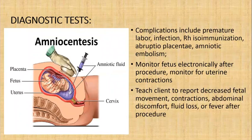Complications of amniocentesis include premature labor, infection, Rhesus isoimmunization, abruption of the placenta, and amniotic embolism. Rh-negative mothers should receive Rho-D immunoglobulin after the procedure. You want to monitor the fetus electronically after the procedure and monitor the mother for uterine contractions. Teach the client to report decreased fetal movement, contractions, abdominal discomfort, fluid loss, or fever after the procedure.